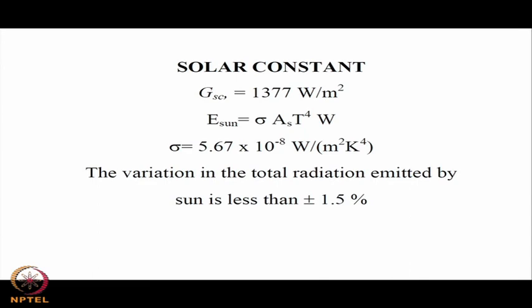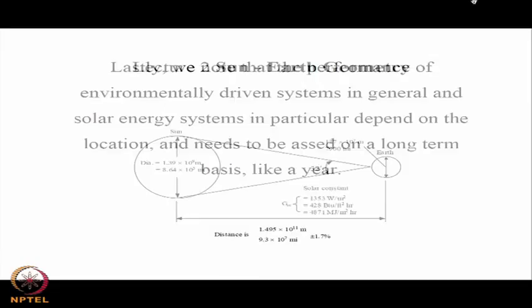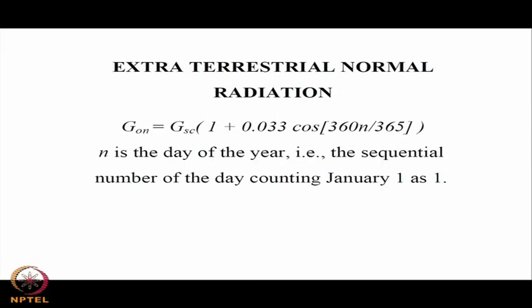The total emitted solar radiation is given by the Stefan-Boltzmann constant sigma times A_s, the surface area of the sun, multiplied by T to the power 4, where T is the effective temperature of the sun. The variation in total radiation emitted by the sun is less than ±1.5%, due to local disturbances like sunspots, but that is often neglected considering the uncertainties in measurement techniques themselves.